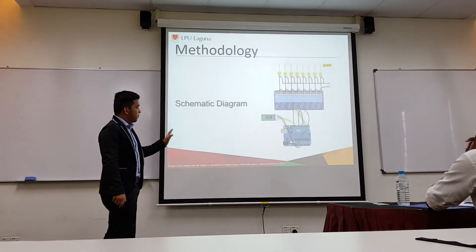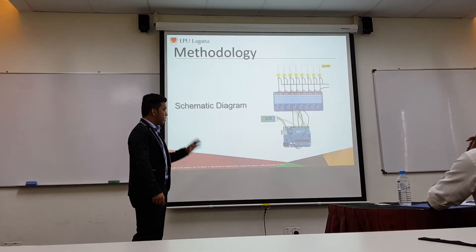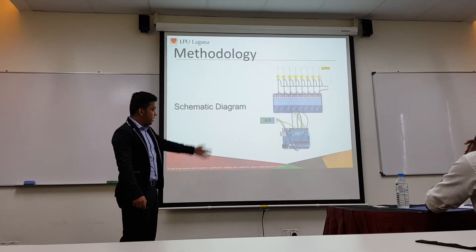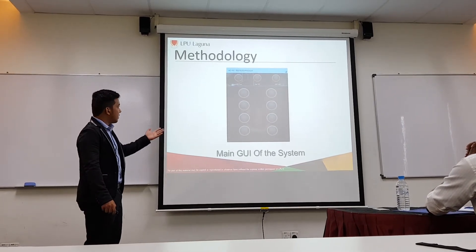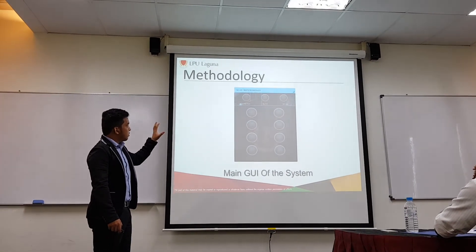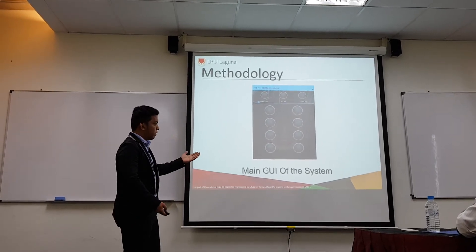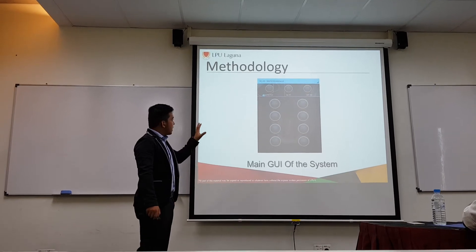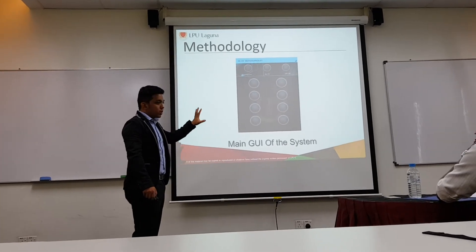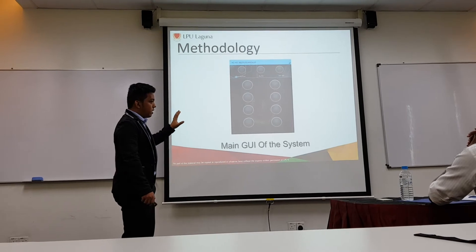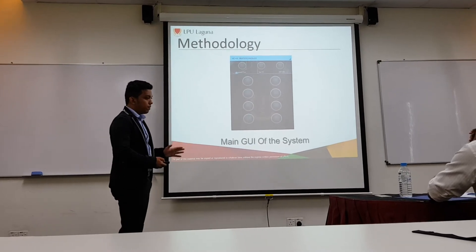Here is the schematic diagram of our system. We have used an 8-channel relay module connected to the Arduino and supplied also by the Arduino. The HC-05 is connected to the pin outputs respectively. Here is the main GUI of our system. We have the connection button — but first the HC-05 must be paired on the smartphone. If you click the connection button, it will automatically connect to the HC-05. We have 8 buttons specified for the 8 channels of the relay, and there is a command to turn on all the lights and turn off all the lights.